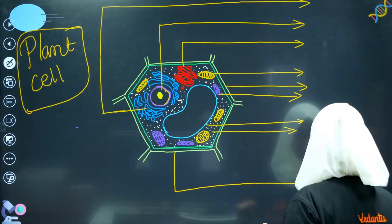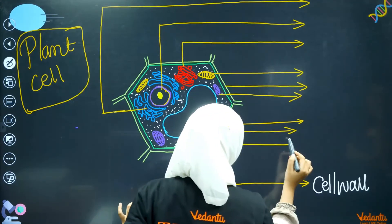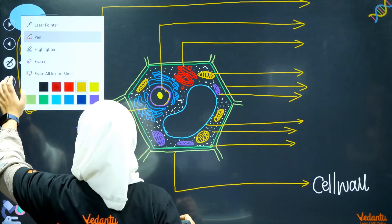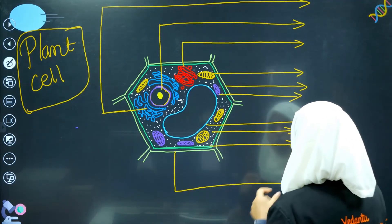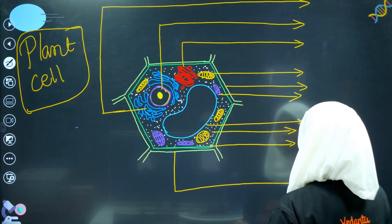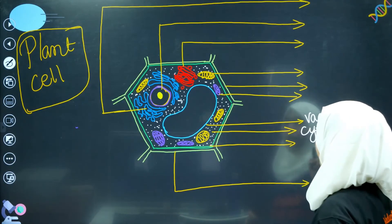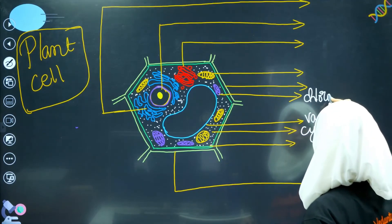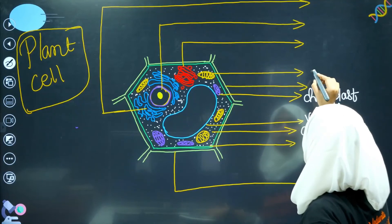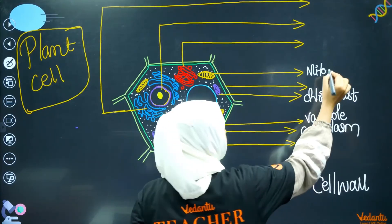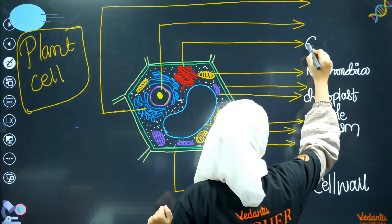This is the cell wall. Inside the wall is the plasma membrane. Plasma membrane is the cell membrane — it is present in animal cells too. This is the cytoplasm. This blue color is the vacuole. And this is the chloroplast. The chloroplast is responsible for photosynthesis. This is the mitochondria.